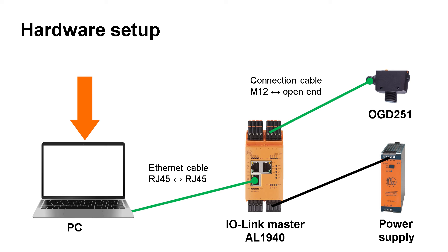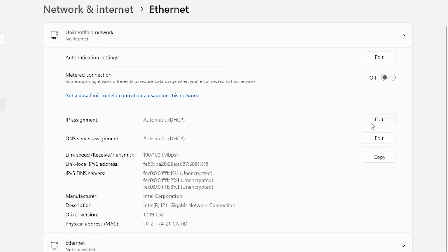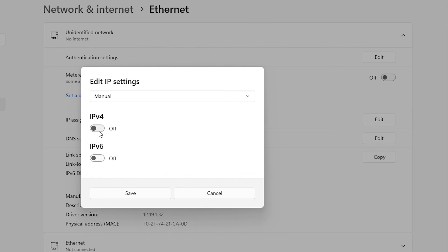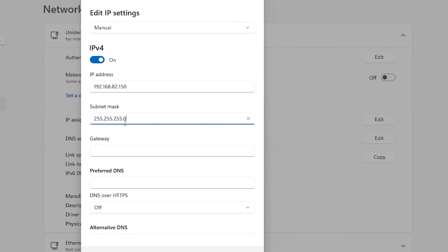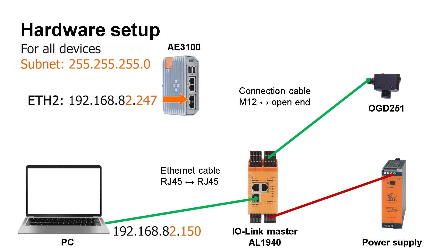Before connecting to the IO-Link master, set the IP address of the PC. Here I set the IP address to 192.168.82.150 and the subnet mask to 255.255.255.0. The reason is that the default IP of the ETH2 port of the AE3100 controller is 192.168.82.247 with the same subnet mask. We will connect the PC to the ETH2 port of the controller later, so both ports must be in the same network to enable communication between the PC and the AE3100.